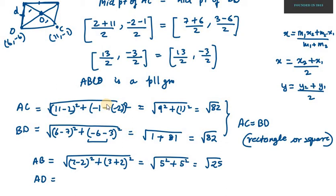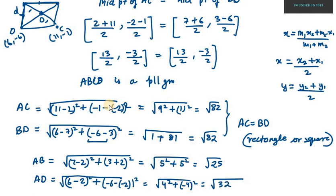Next is AD. Let's find AD. AD is square root of (6 minus 2) whole square plus (minus 6 minus minus 2) whole square. 6 minus 2 is 4 square, and minus 6 plus 2 is minus 4 whole square. So it will be 16 plus 16, which is square root of 32. You can see that AB is not equal to AD.